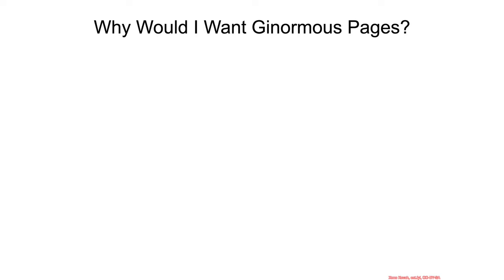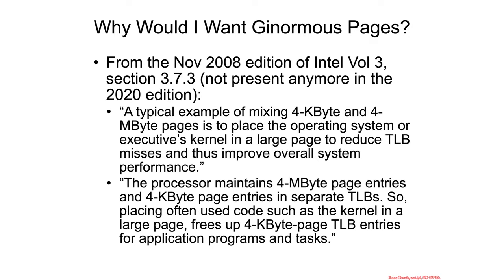Why do we want to use large pages that are 2 megabytes, 4 megabytes, or 1 gigabyte instead of always using a 4 kilobyte page? From the November 2008 edition of the Intel manual, it says a typical example of mixing 4 kilobyte and 4 megabyte pages is to place the operating system or kernel into a large page to reduce TLB misses and thus improve overall system performance.